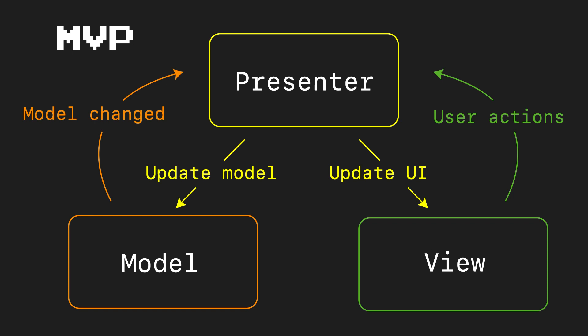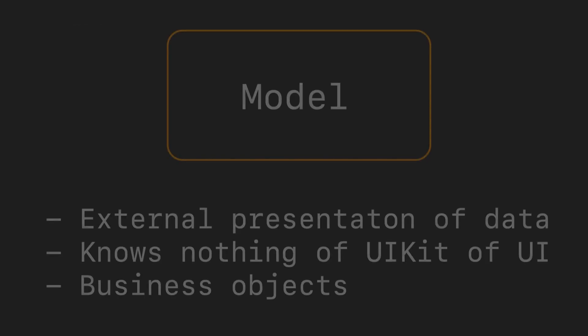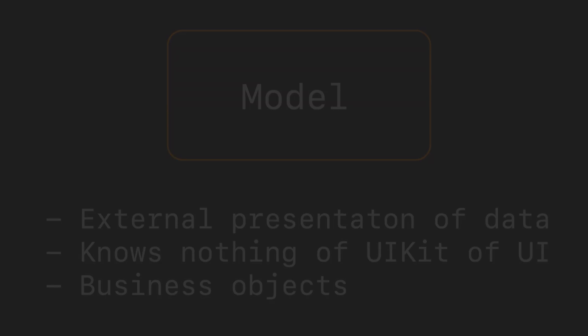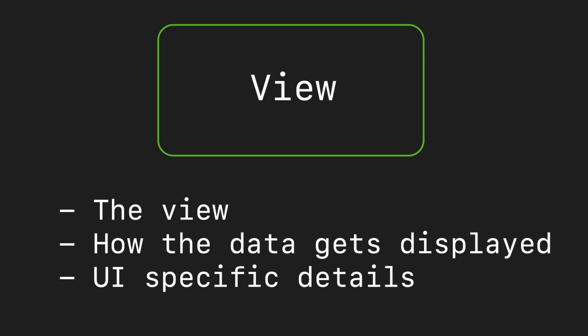The model is your external representation of data in your application. It knows nothing about UIKit, Cocoa, or anything to do with the UI — it's purely your business objects. This is typically what you would translate an HTTP JSON request into and how you'd represent business objects in your application.